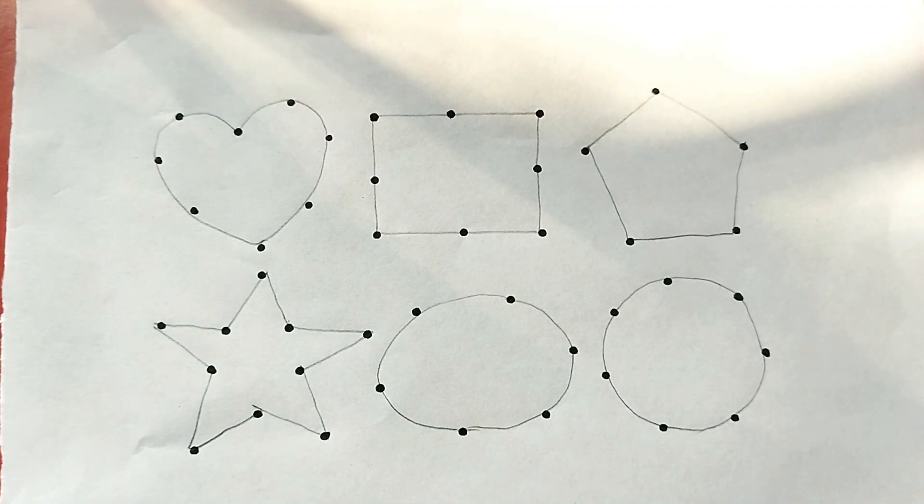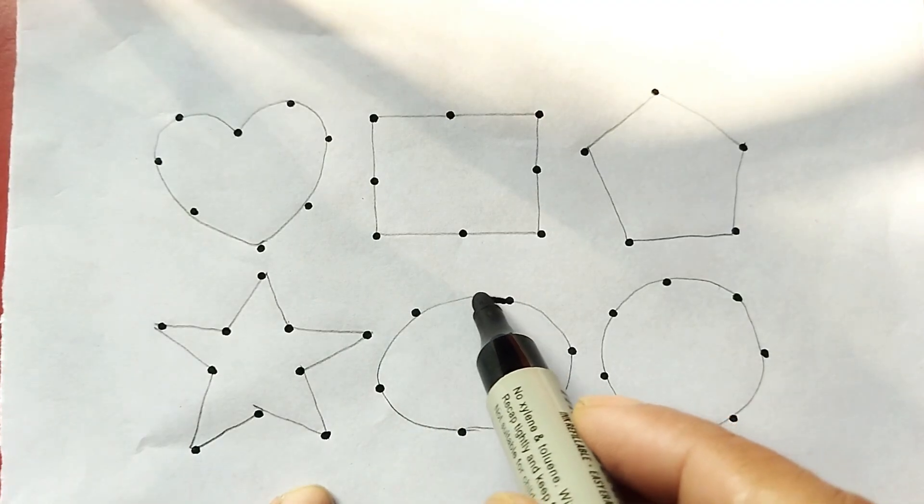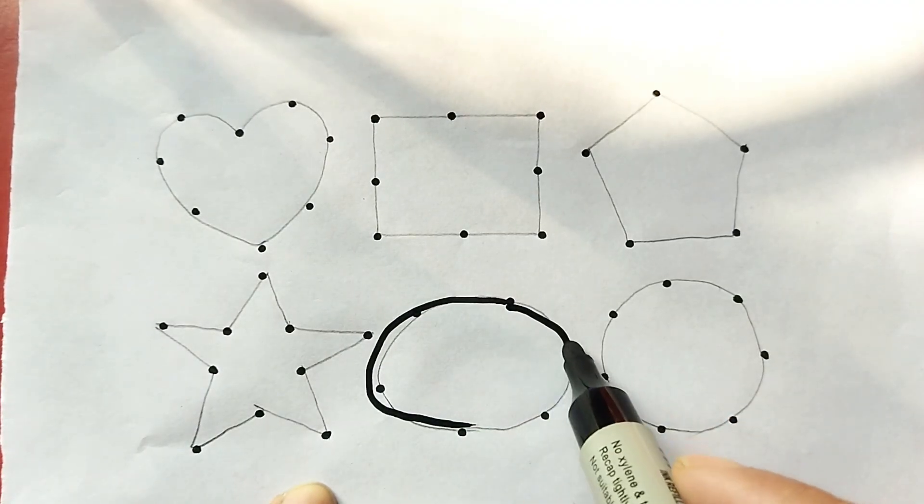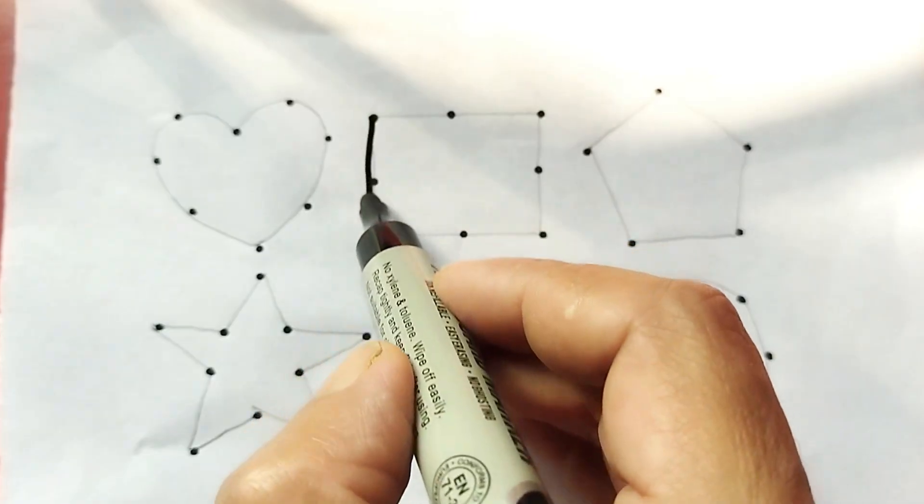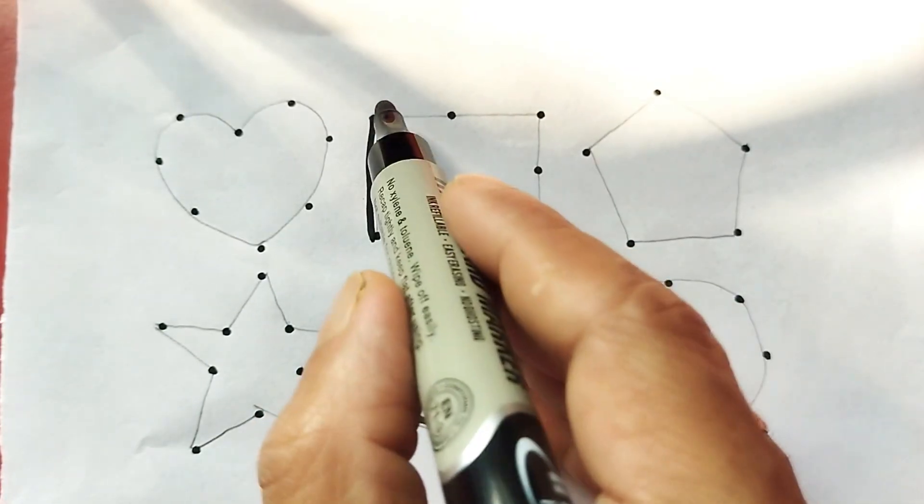Now I am adding the dots and creating the shapes. This is an oval shape. This is a rectangle.